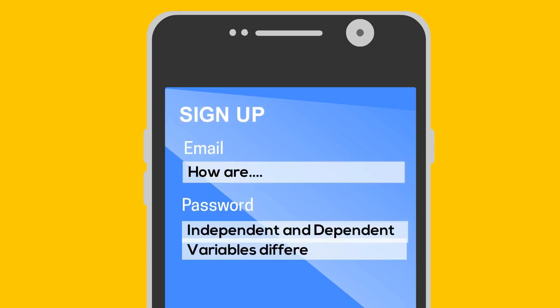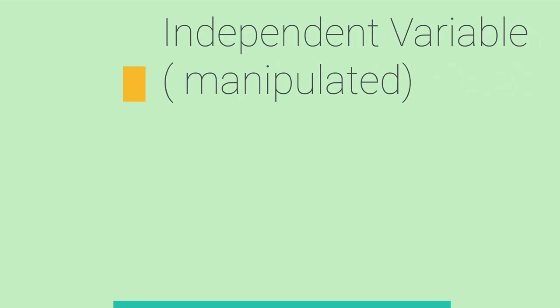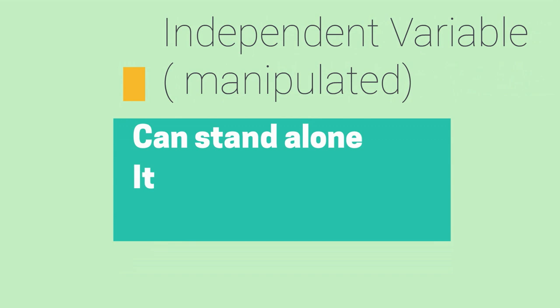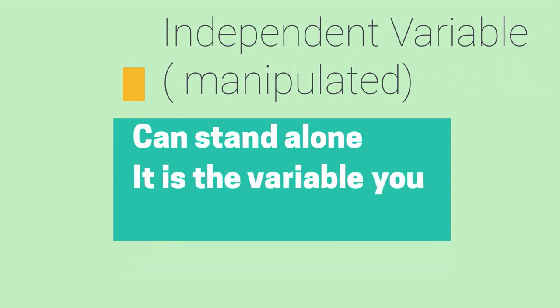An independent variable, also called the manipulated variable, has the ability to stand alone. It is not changed by the other variable. It is the variable you are changing or manipulating.